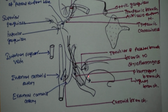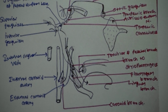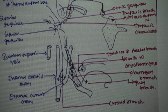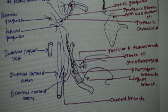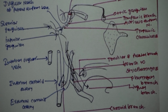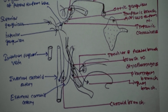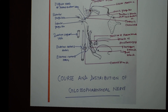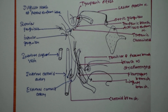It enters the posterior portion of the tongue and supplies the posterior one-third of the tongue. The glossopharyngeal nerve plays a dual role in the posterior one-third of the tongue — it carries general sensation as well as taste sensation from the posterior one-third of the tongue, including its circumvallate papillae. The circumvallate papillae are related to taste sensation.